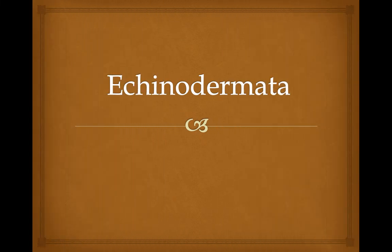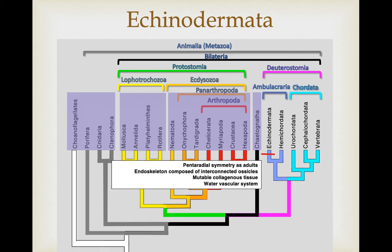In this video we cover our first deuterostome group, and this is a group of animals that have some really bizarre characteristics. The groups in purple we've already covered. We've left the protostome group, went through the transitional group called the chaetognatha, and now we're entering the deuterostomea. The first group we're going to look at are the Echinodermata, the spiny-skinned animals.